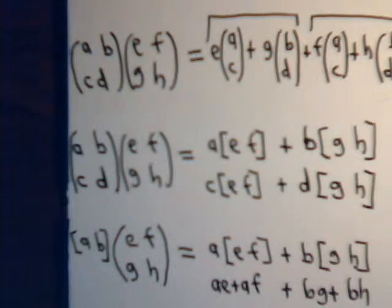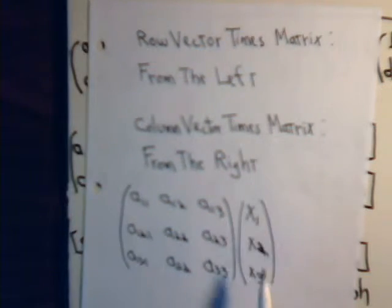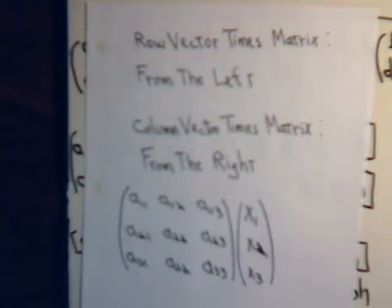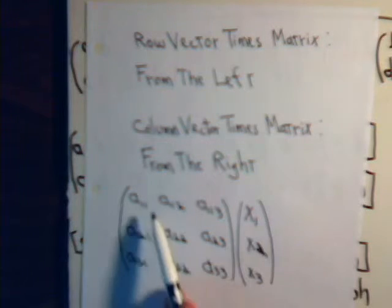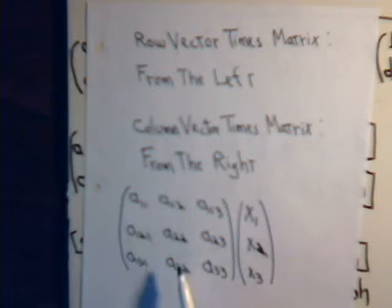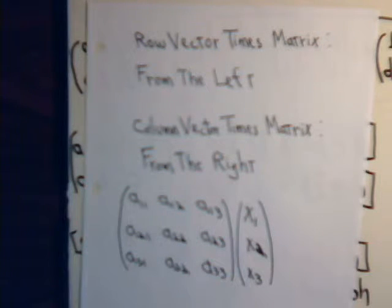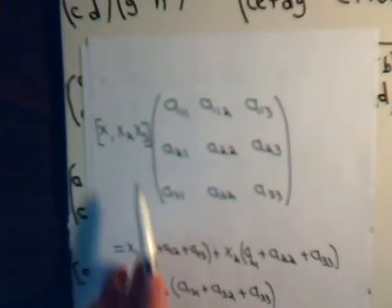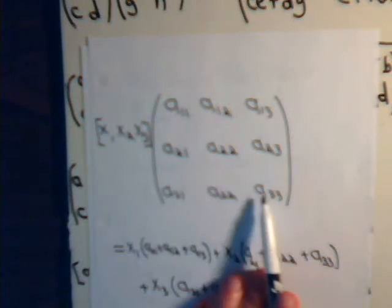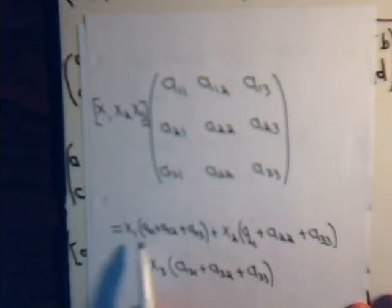If you're going to multiply a matrix by a column, then of course you multiply it on the right. We can think of that multiplication as X1 times the first column, plus X2 times the second column, plus X3 times the third column — or we can think of it as going across and down and adding up. For a 3 by 3 matrix multiplied by the row X1, X2, X3 from the left, it's X1 times the first row, plus X2 times the second row, plus X3 times the third row.